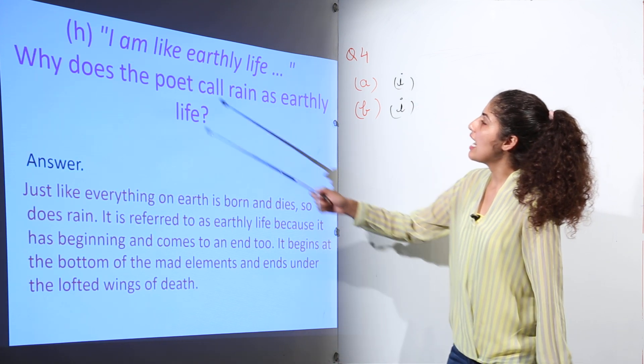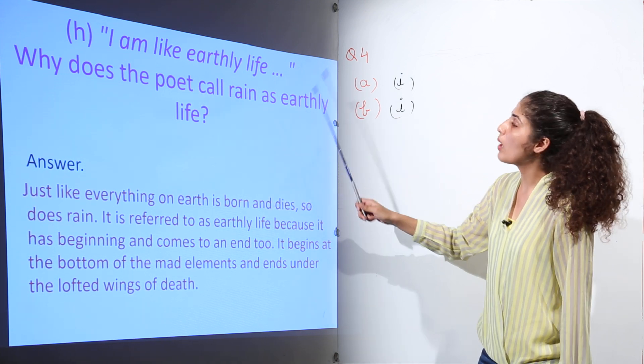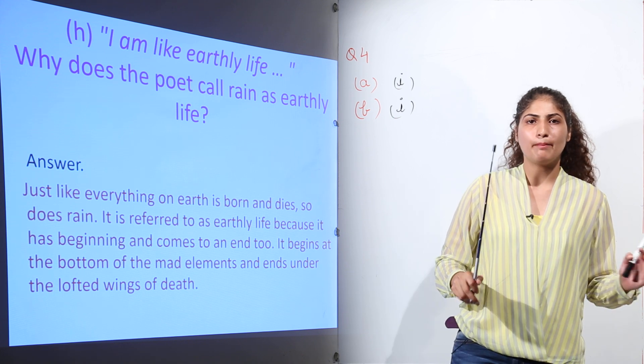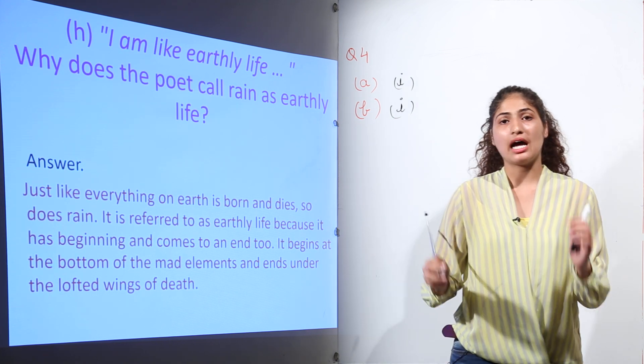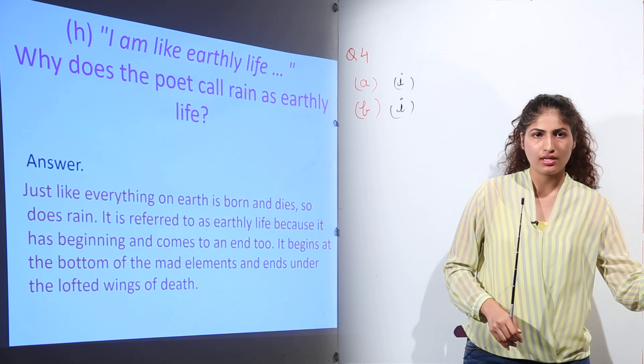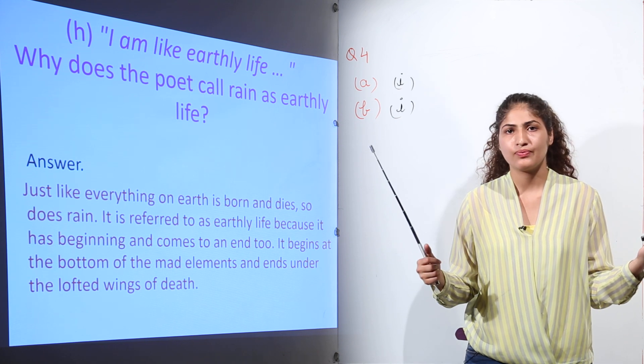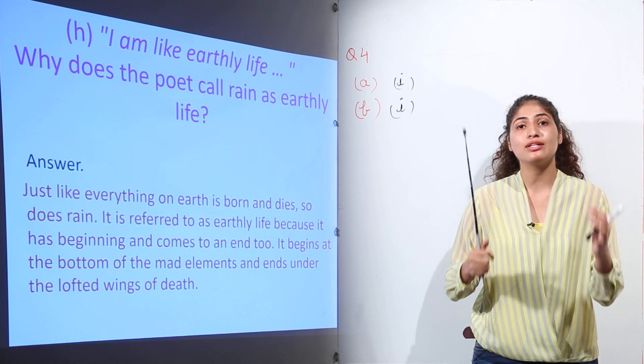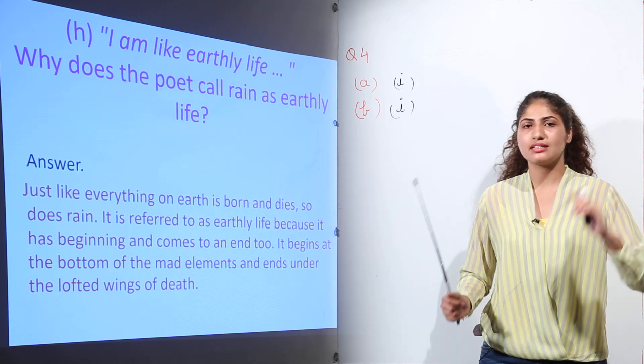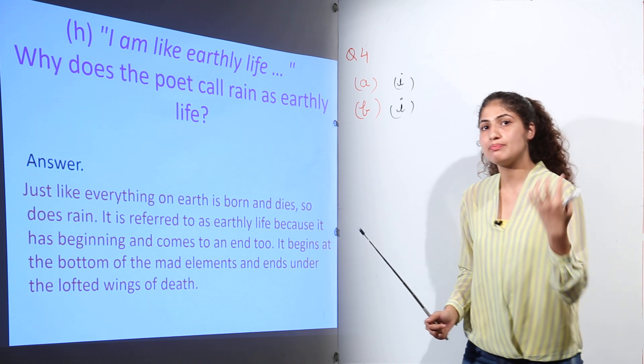Next question: I am like earthly life. Why does the poet call rain as earthly life? Here the rain is being compared with that of the earth, with that of the life on the earth. Because the life on the earth on one side and the life of the rain on the other side is not perennial. It is going to end, it is not going to continue forever. So we can say that the life of the rain and that of the human life is brief.